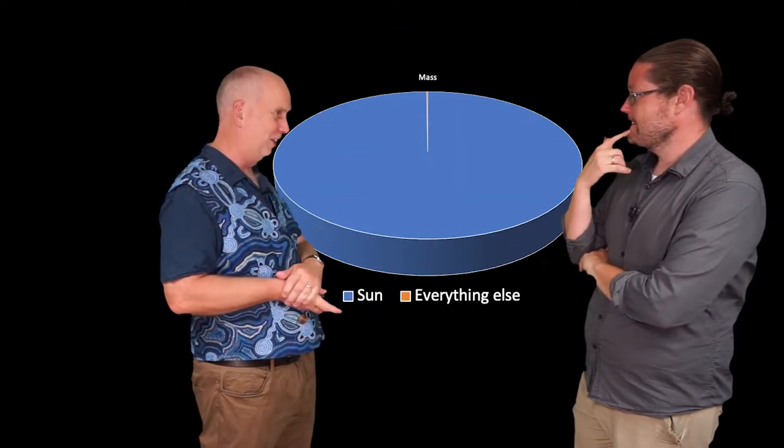And not just slightly bigger. Here's a pie chart of all the masses. Blue is the sun, and a little slice is everything else.